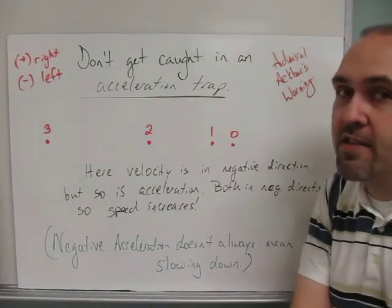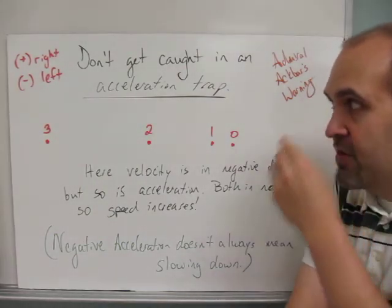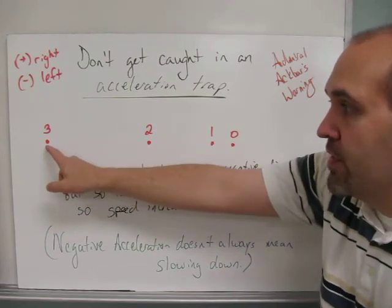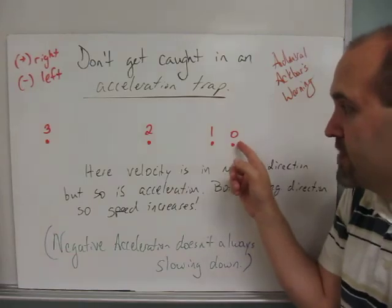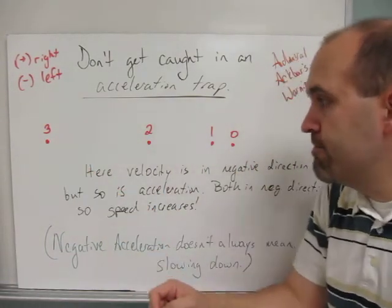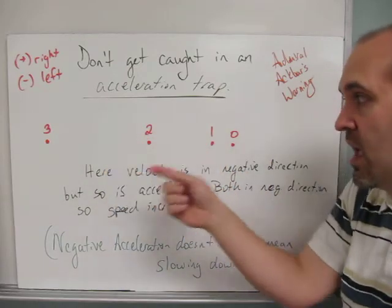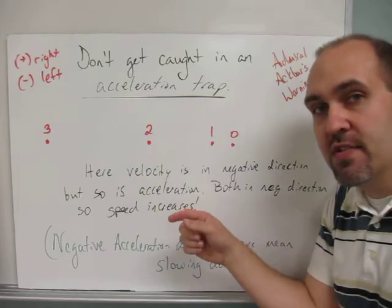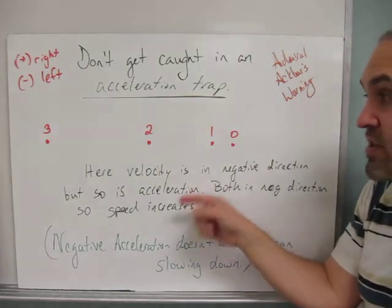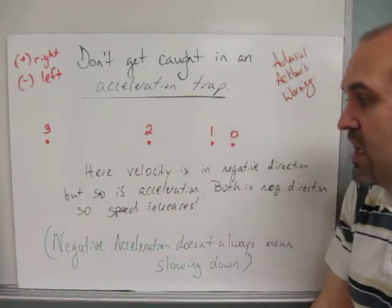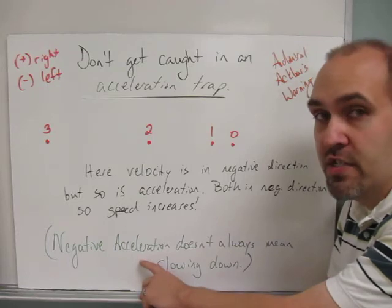Don't get caught in an acceleration trap. This is Admiral Ackbar's warning, it's a trap. Look at this example. Here we've got 3 and 2 and 1 and 0, which means the object is actually going left. From time-wise, so it goes 0, 1, 2, and 3. And here the velocity is in the negative direction, it's to the left. And it's speeding up. So if we did that same kind of analysis that we did on the previous board, you would see that the acceleration is also left, and the velocity is left, and here it's speeding up.